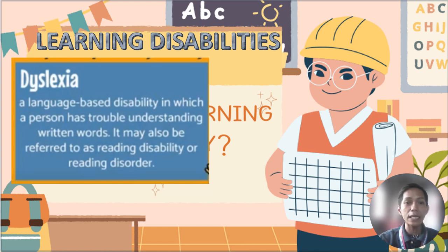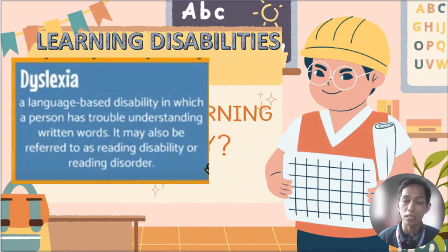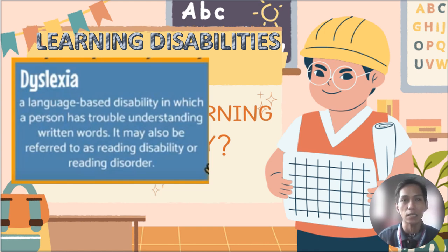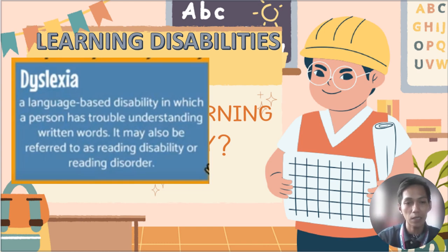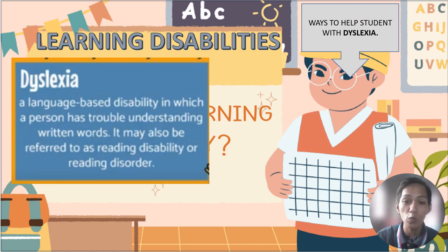One learning disability is dyslexia. Dyslexia is a language-based disability in which a person has trouble understanding written words. It may also be referred to as a reading disability or reading disorder. A child with dyslexia has a disorganized arrangement of letters in their mind, unlike a typical child whose mental representation of letters is organized.